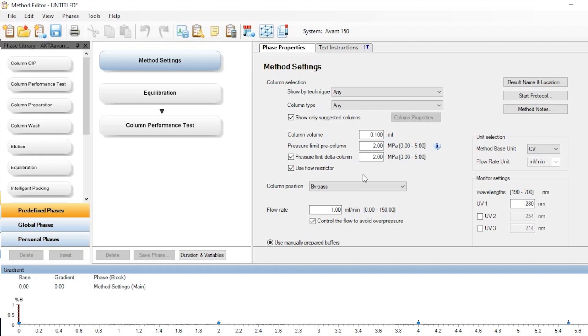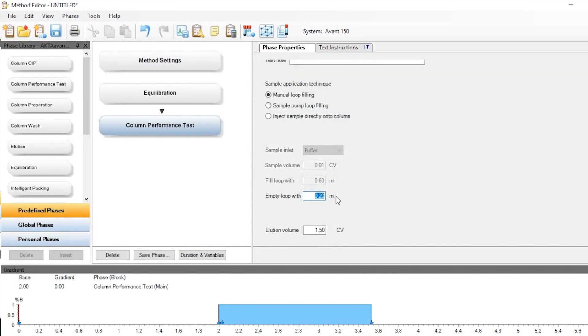Type in related parameters such as pre-column and delta pressure limit according to the column and resin type, inlet of buffer, flow rate, volume of equilibration, and volume of sample application. Here, Capto-Q Impress was packed in Tricorn 10 over 100 to a volume of 7 milliliters. The pressure limits were set accordingly and the sample volume was set to 0.07 milliliters.